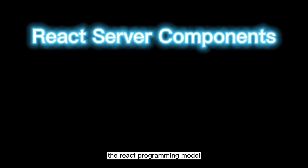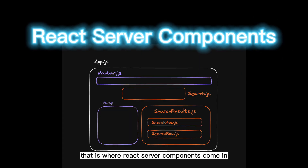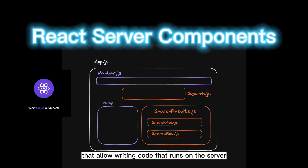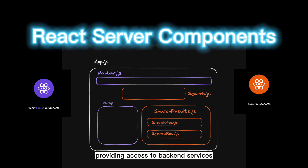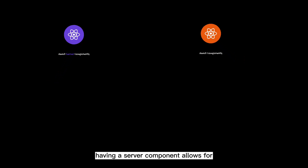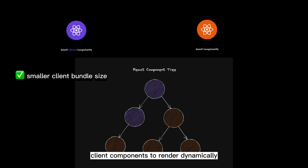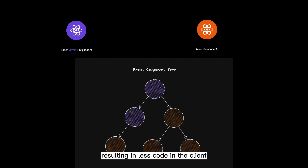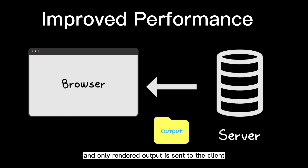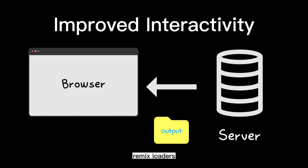How are they trying to extend the React programming model? That is where React server components come in — they allow writing code that runs on the server, providing access to backend services while retaining a component-oriented model. Having a server component allows structuring applications and choosing which client components to render dynamically, resulting in less code on the client. Server components stay on the server and only rendered output is sent to the client, providing benefits similar to frameworks like Remix loaders.